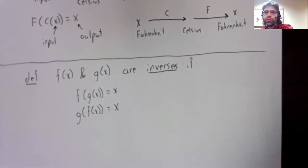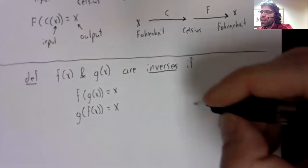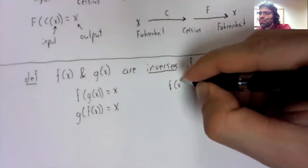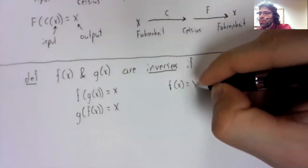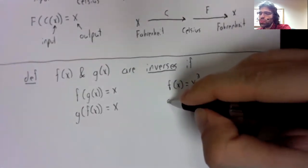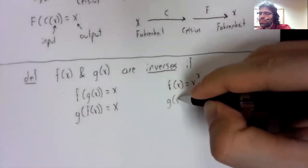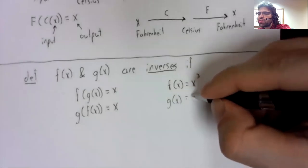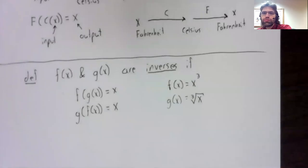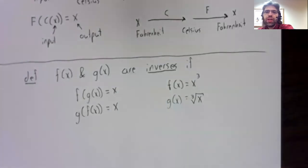The intuition behind inverses is that functions are inverses if they undo one another. So conversion from Celsius to Fahrenheit and conversion from Fahrenheit to Celsius are inverses because those processes undo one another.